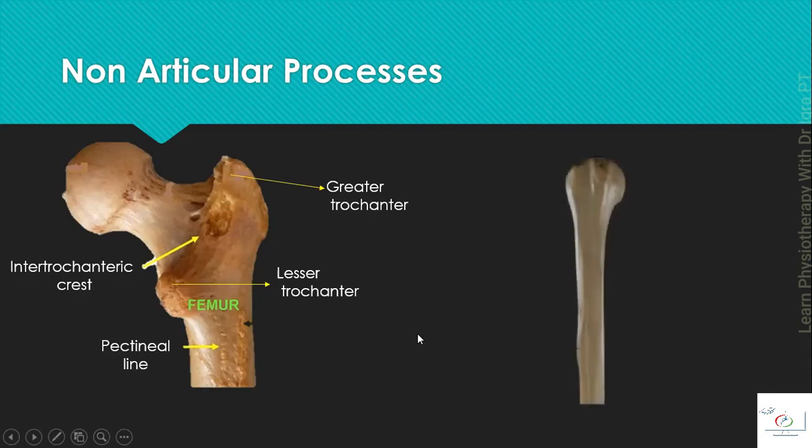Now the tubercle. Tubercle is a small rounded projection on the bone. Example is the greater tubercle and the lesser tubercle. The point to remember: they are non-articular and give attachments to the muscles or the ligaments.